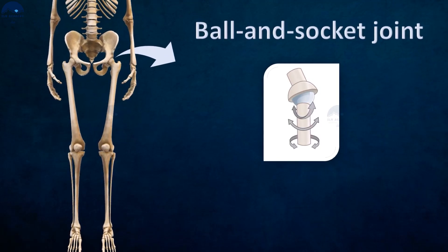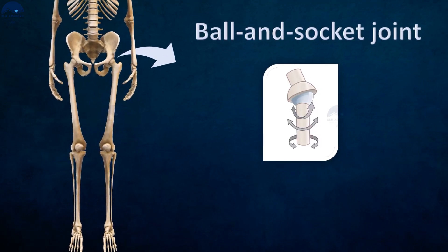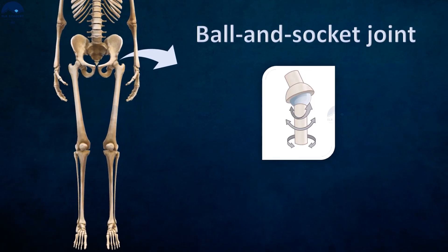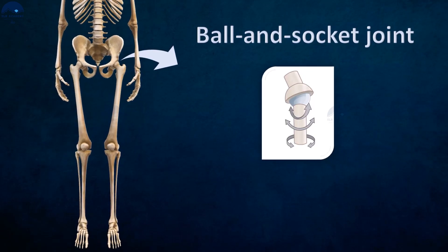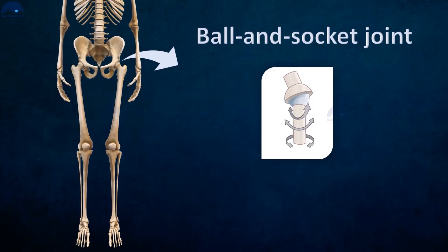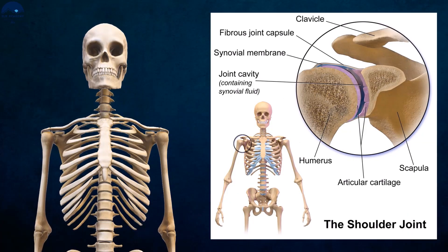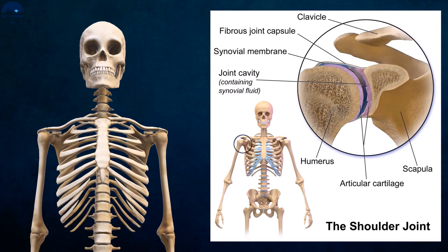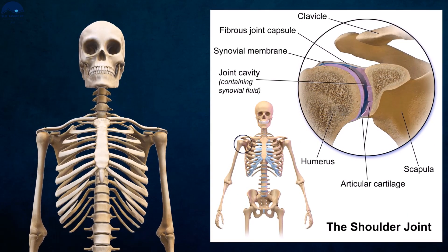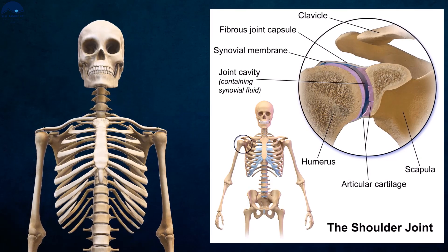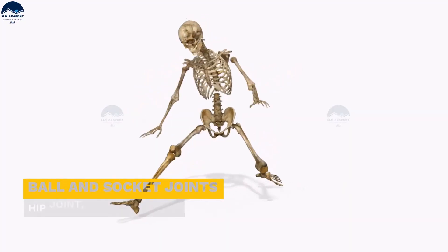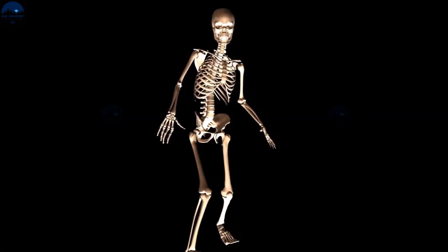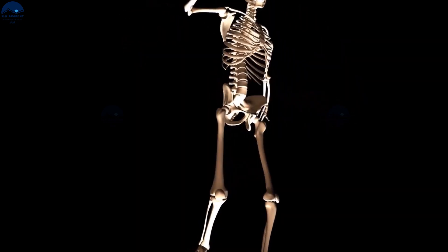Ball and socket joint: In this joint, the end of one bone is round like a ball. It fits into the socket of another bone and allows maximum movement in all directions. For example, the hip bone and the shoulder bone.